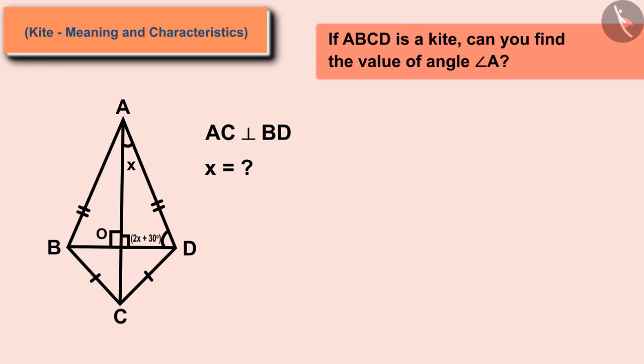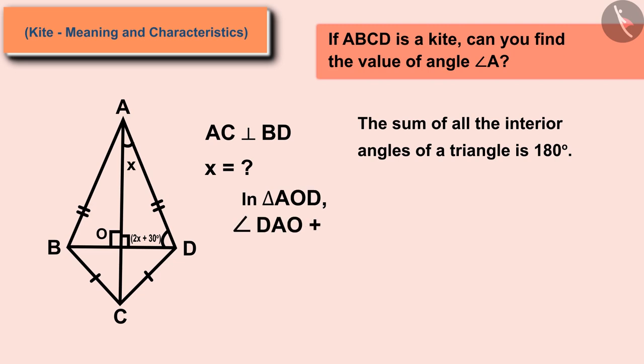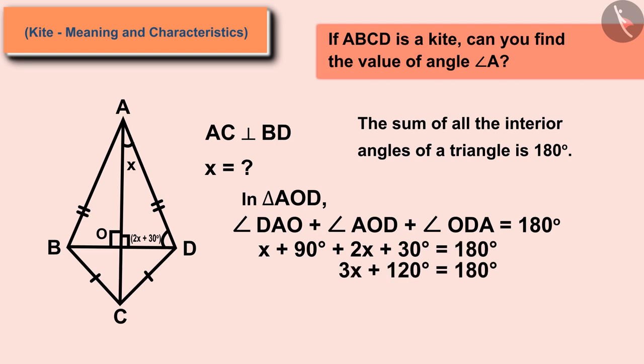So we can write this equation for triangle AOD. Substituting all the values into this equation gives us a linear equation in one variable. On solving this, we get the value of X as 20 degrees.